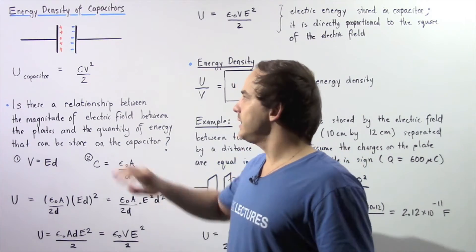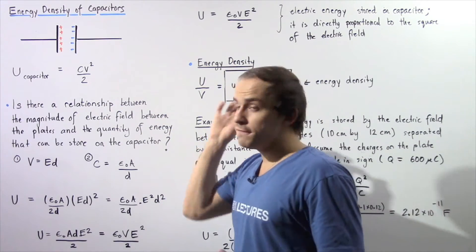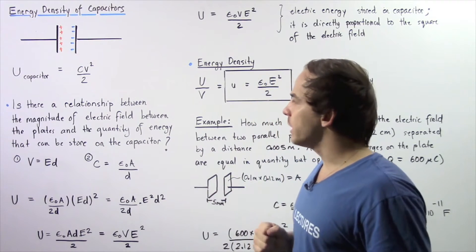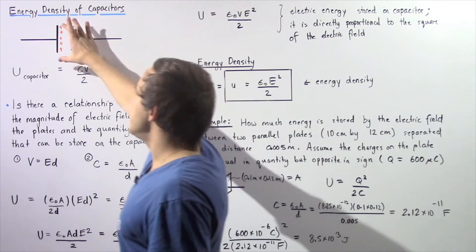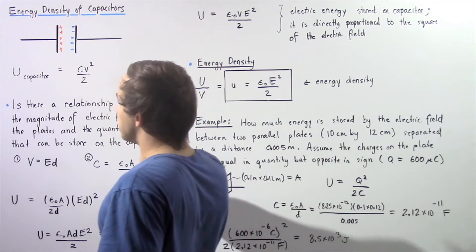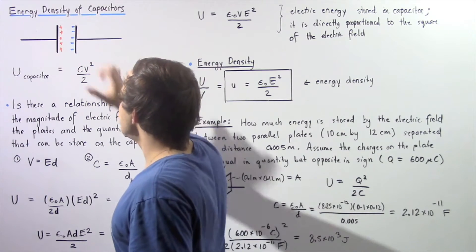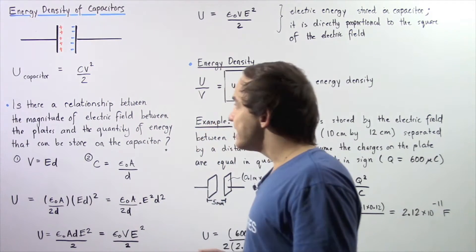Let's begin by looking at the following diagram of a fully charged parallel plate capacitor. This plate of our capacitor is positive and this plate is negative.